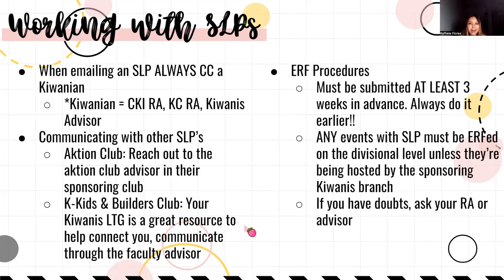The ERF — Event Request Form — is a form you must submit in advance to do an event with an SLP. You have to plan ahead, get permission from advisors, and make sure everyone is on the same page. ERFs must be submitted at least three weeks in advance — always do it earlier. It has a long approval process, so keep everyone in the loop. Any events with an SLP must be ERF'd first on the divisional level, unless hosted by the sponsoring Kiwanis branch. If in doubt, always ask your region advisor.